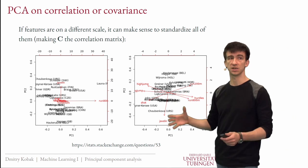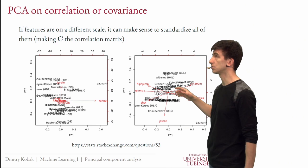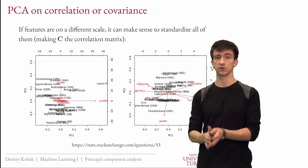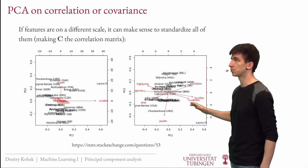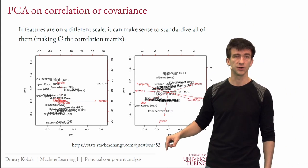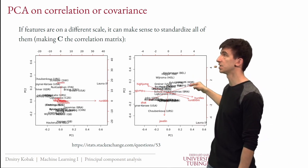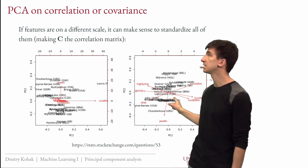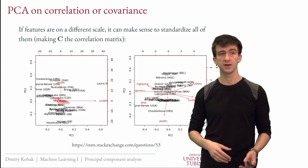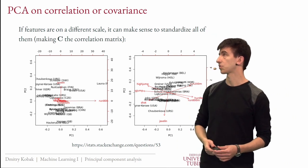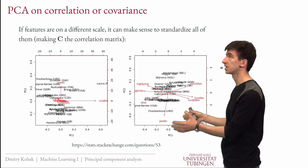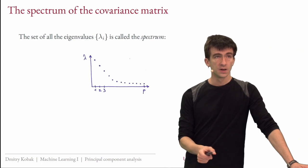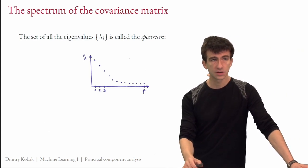But if you standardize all features first and then do PCA, you get a much more meaningful picture. Now all features contribute. You can see that running 800m and running 200m are correlated — they point in similar directions — and they are anti-correlated with jumping results. The javelin axis is roughly orthogonal to that, representing an independent mode of variation. This is a very insightful plot that you only get after standardizing.